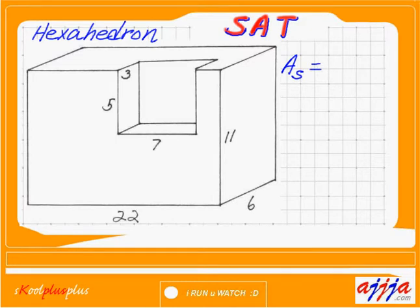First of all, let's talk about side area first. Side area, which is six times eleven, right? You know that. Six times eleven. Then there's also the left side — that's right, double. We've got to double this one.